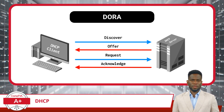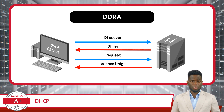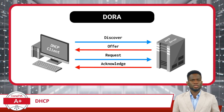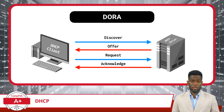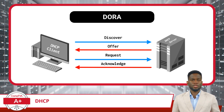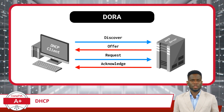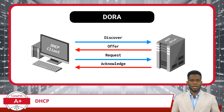Here is a quick breakdown. The process begins with Discovery. Imagine a new device, like a laptop or a smartphone, connecting to a network for the first time. This device doesn't yet have an IP address, so it broadcasts a discovery message across the network. This message is a digital shout-out saying, 'New here — is there a DHCP server that can assign me an IP address?'